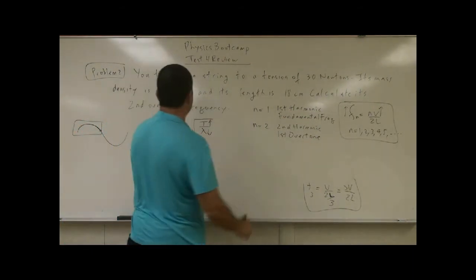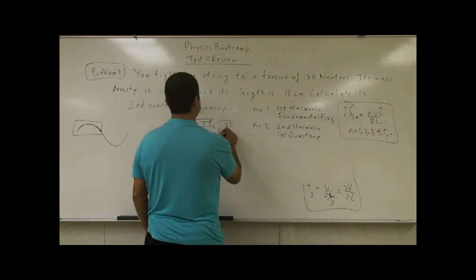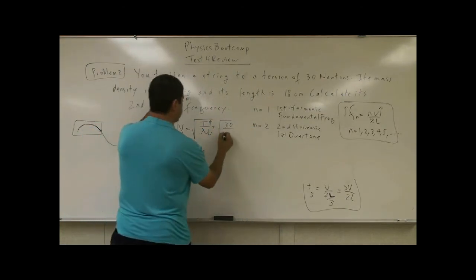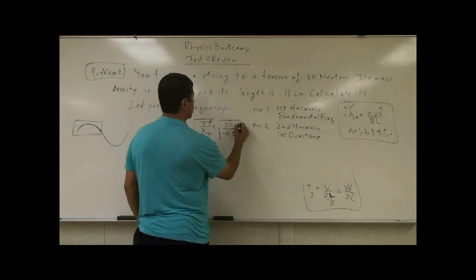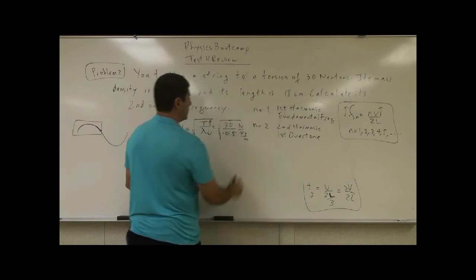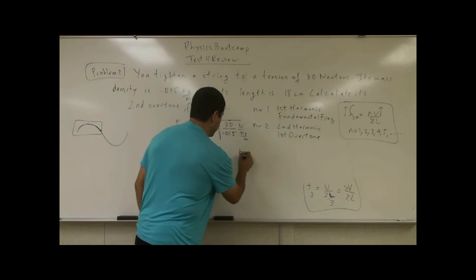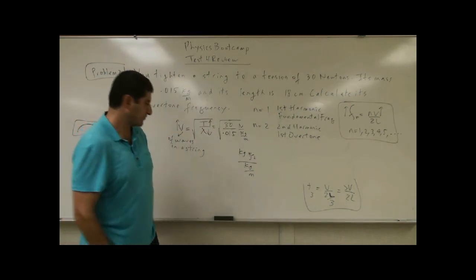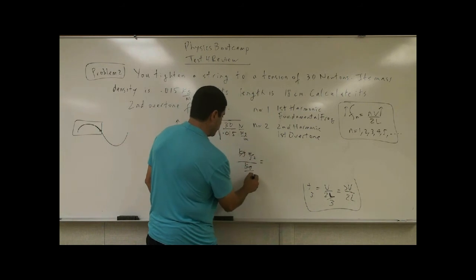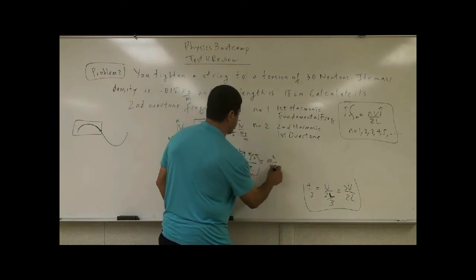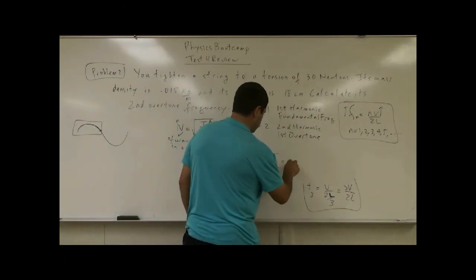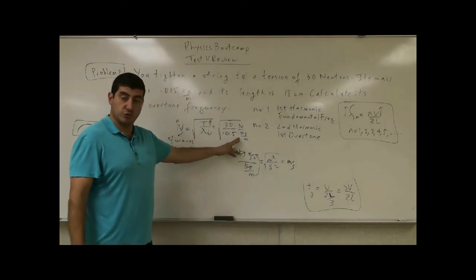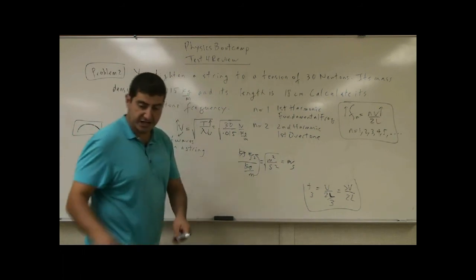So it's telling us in this problem that the tension is 30 newtons. The linear mass density is 0.015 kilogram per meter. And what's the units of that going to come out? Newton per kilogram per meter. Well, Newton is defined as kilogram meter per second squared. If you divide that by kilogram per meter, what are you going to get? Kilogram, kilogram is going to cancel. The meter is going to go up. You're going to get meter squared over second squared. When you square root that, what are you going to get? Meter per second. So the units of this will work out so that it gives you units of velocity.